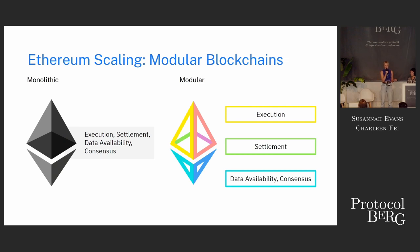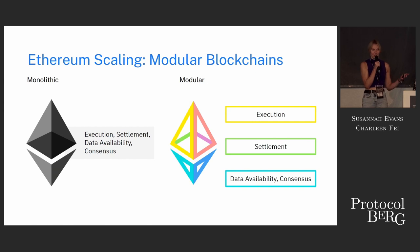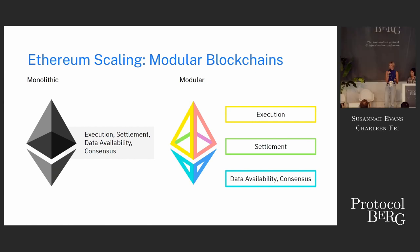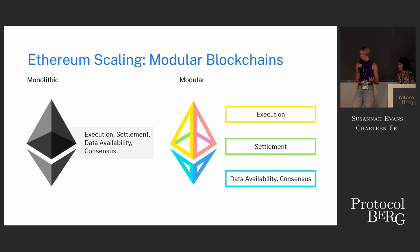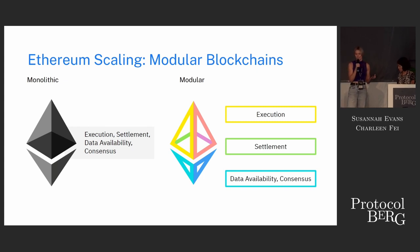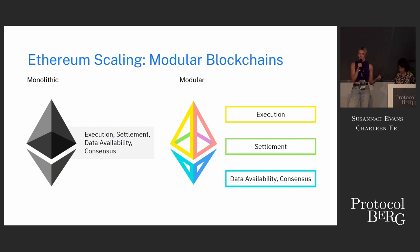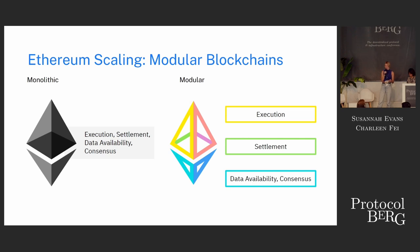Many of you are aware of this modular blockchain paradigm. Previously, we had monolithic blockchains that were responsible for execution, settlement, data availability, consensus, transaction ordering — everything in one chain. Whereas the modular blockchain paradigm says we can actually split up these components. This means we can optimize and improve on how we do each of these components in the modular stack. But it also means that execution is fragmented across lots of different rollups, and this creates its own problems.